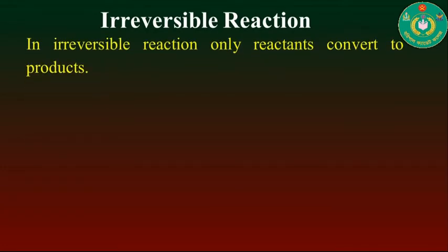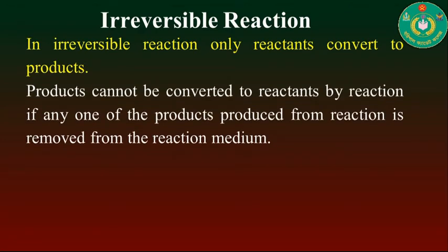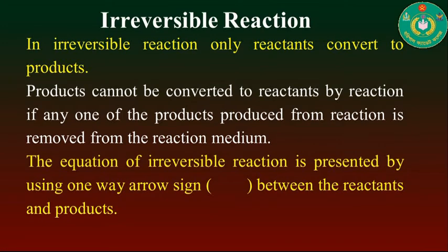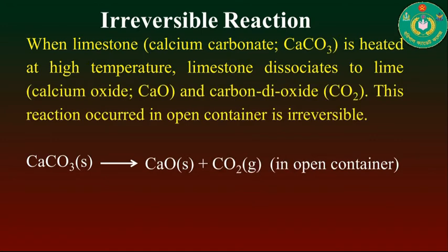In an irreversible reaction, only reactants convert to products; products cannot be converted back into reactants. The equation of an irreversible reaction is represented by using a one-way arrow sign between the reactants and products. For example, when limestone is heated at high temperature, it dissociates into lime and carbon dioxide. This reaction, which occurs in an open container, is irreversible.